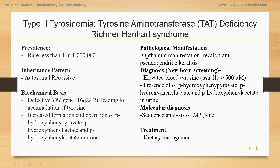The pathological manifestation is mainly ophthalmic, with recalcitrant pseudodendritic keratitis caused by the accumulation of these byproducts. The diagnosis: this is usually milder than type 1 tyrosinemia and is generally associated with elevated tyrosine levels greater than 500 micromoles. The presence of parahydroxyphenylpyruvate, parahydroxyphenyllactate, and parahydroxyphenylacetate in urine is also suggestive of type 2 tyrosinemia.